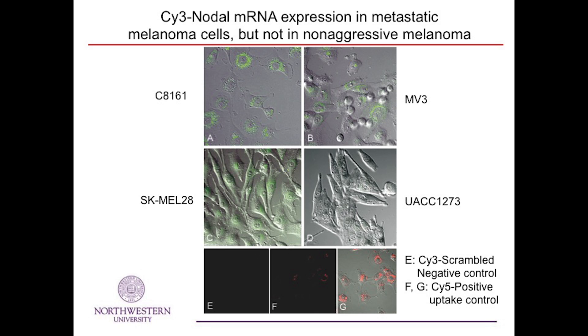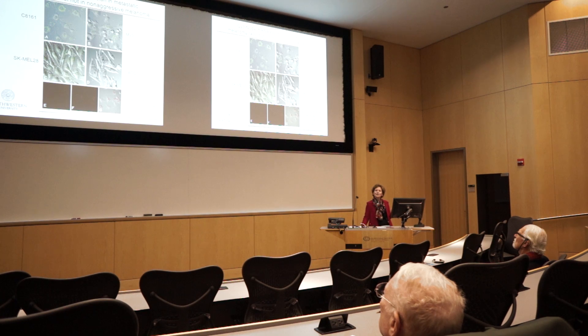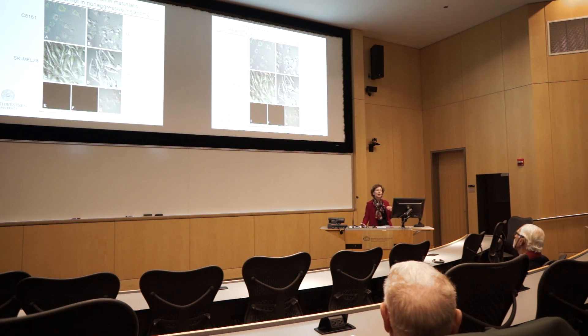Using a Cy3 green fluorescent probe, we show where the nodal mRNA SmartFlare is localized within three different metastatic melanoma cell lines versus a non-aggressive cell line. In the metastatic cells, many are fluorescing green, indicating specifically which cells are expressing the nodal gene, versus cells with very low-level expression or no expression, because they're part of a heterogeneous group. Looking at a non-aggressive melanoma cell line, UACC cells, there's no fluorescence, confirming these probes correctly indicate which cells are actually producing nodal.